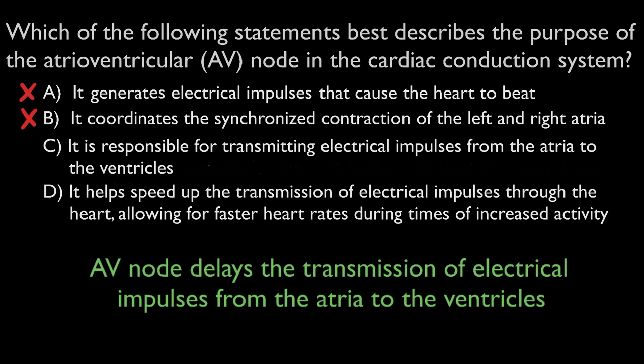This means that option D is incorrect. In addition to its role in delaying the transmission of electrical impulses, the AV node also helps to coordinate the contraction of the ventricles,